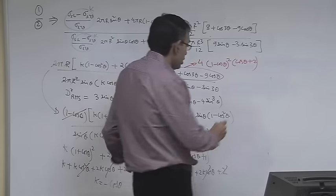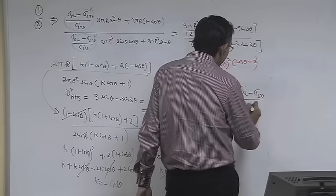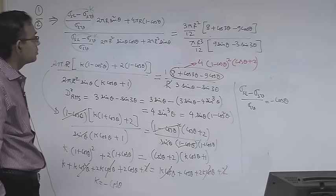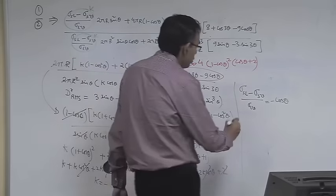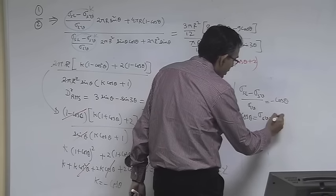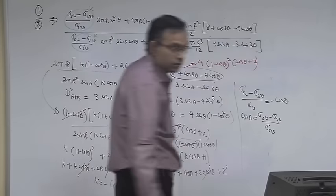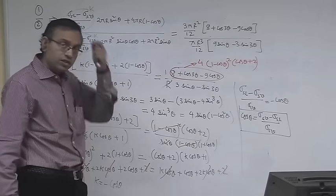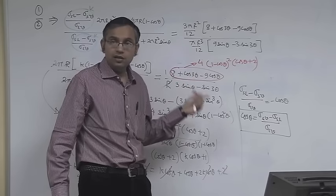This result, k = −cosθ, means (sigma_SL − sigma_SV)/sigma_LV = −cosθ, or equivalently cosθ = (sigma_SV − sigma_SL)/sigma_LV. This is the condition for equilibrium of the droplet and it is known as Young's equation. The previous related result was the Young-Laplace equation; this is Young's equation.